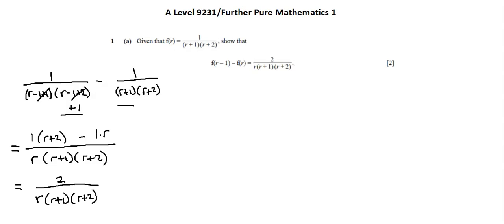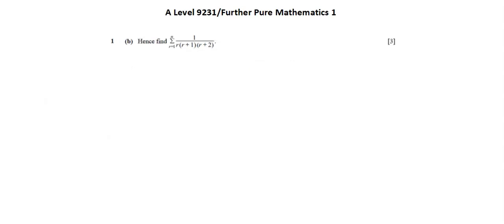Now going to requirement b. Hence, find the sum of r equals 1 to n of 1 over r times quantity r plus 1 times quantity r plus 2. Notice the term hence. That means we need to follow through on our work from part a. As an alternative, we could use partial fractions to answer part b, but because of hence, I want to go back to see what I ended up with as a result of my work in a, which is 2 over r times r plus 1 times r plus 2.